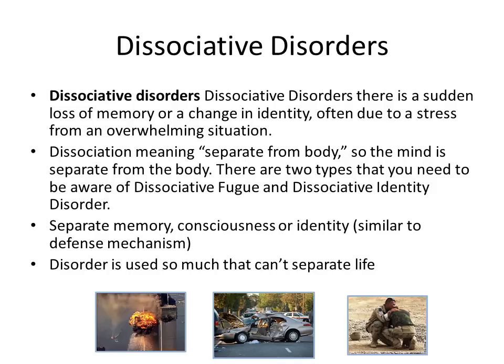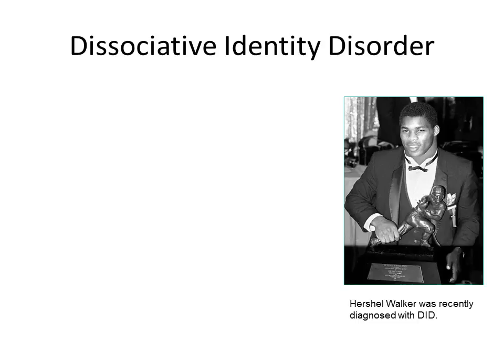The other category is dissociative disorders. There is a sudden loss of memory or change in identity, often due to stress from an overwhelming situation. 'Dissociative' means separate from the body — the mind is actually separate from the body. There are two types you need to know: dissociative fugue and dissociative identity disorder. In both, memory is separate from conscious identity, and the disorder can be so severe that you actually live a separate life.